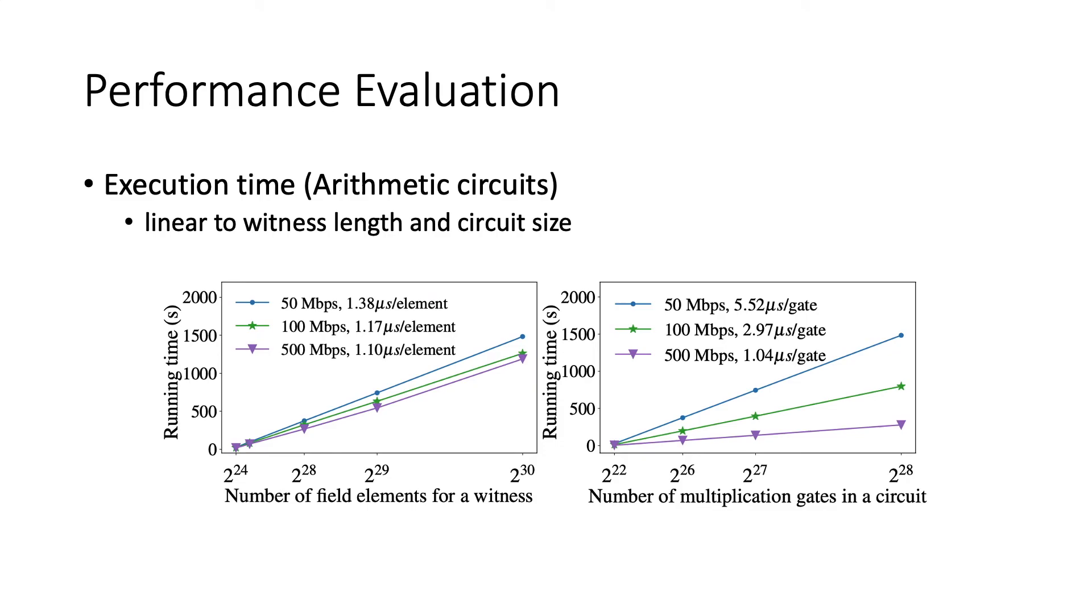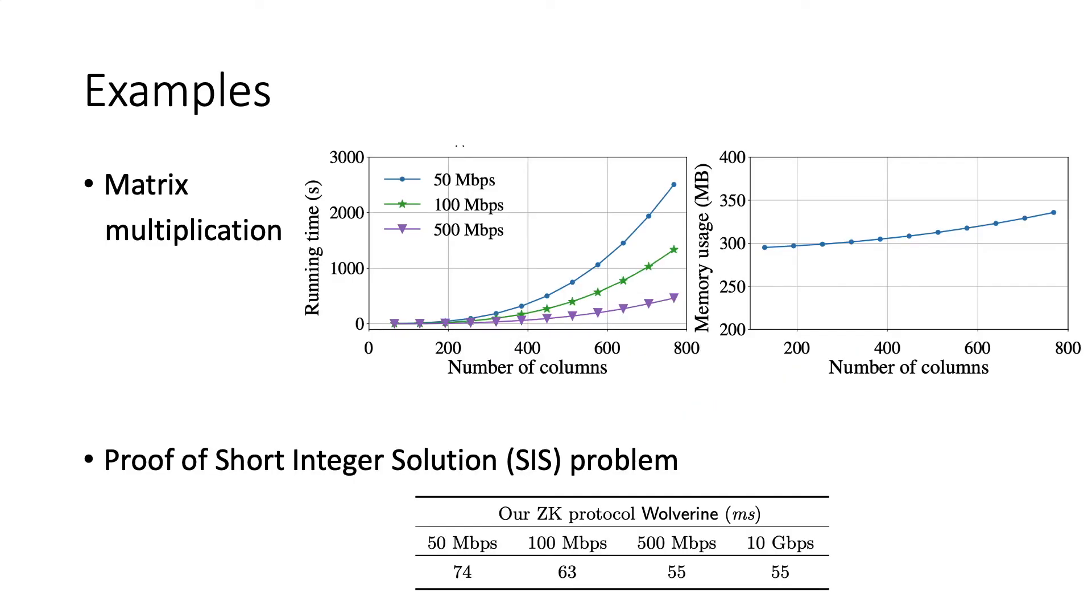For arithmetic circuits, again, the execution time is linear to the witness length and the number of multiplication gates in the circuit. And when the network is reaching five megabits per second, the throughput is nearly one million gates per second. We use matrix multiplication to benchmark the performance of multiplication gates. We use the naive way to compute the matrix multiplication with complexity of n cubed. And again, the running time is linear to the number of multiplication gates and the memory usage is very small.